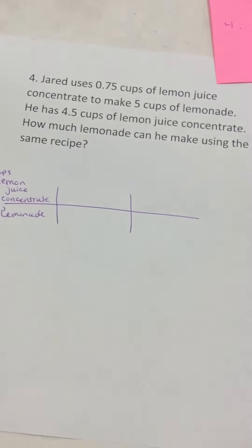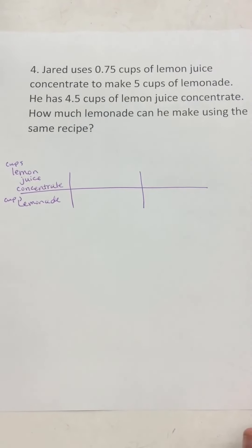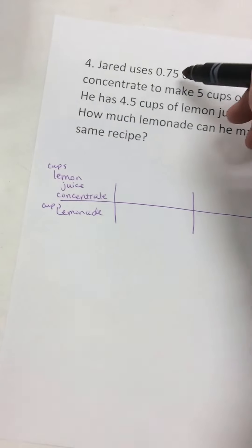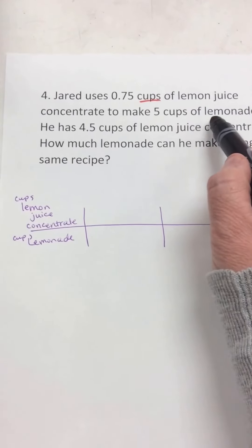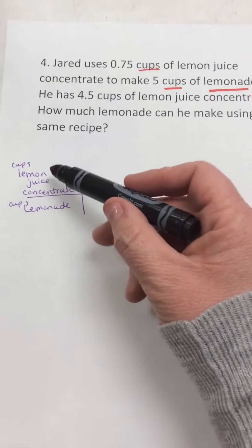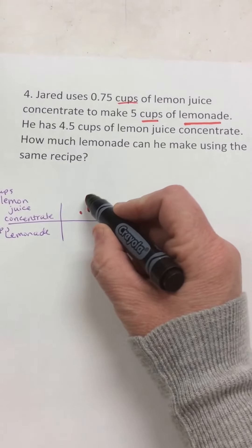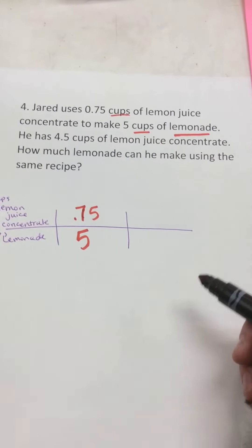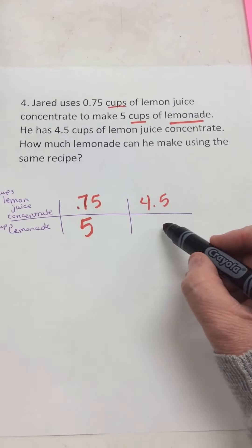Okay, last question. Jared uses 0.75, or three-fourths, cups of lemon juice concentrate — the strong lemon juice mix — to make five cups of lemonade. So I'm comparing cups of lemon juice concentrate to cups of lemonade. If I have four and a half cups of that lemon juice concentrate, how many cups of lemonade would I make?